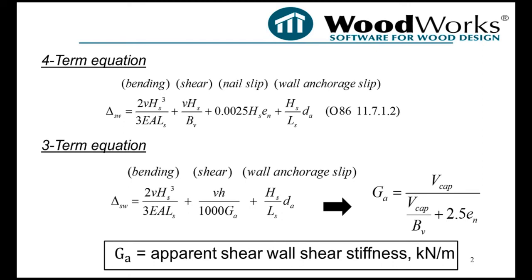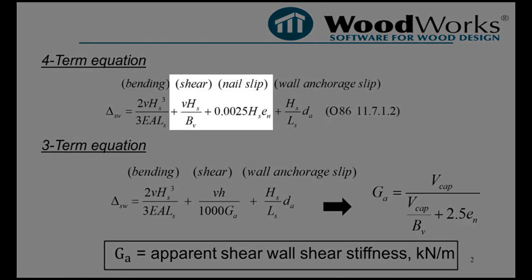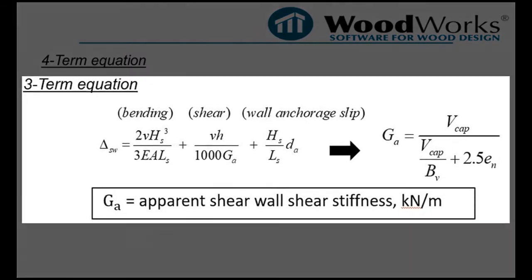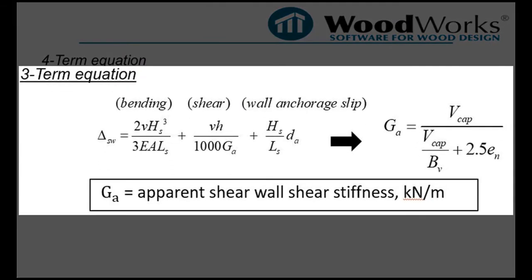The three-term equation is a simplification of the four-term deflection equation, where the shear and nail slip components of the four-term equation are combined into one shear component. This equation makes it necessary to calculate an apparent shearwall shear stiffness GA.